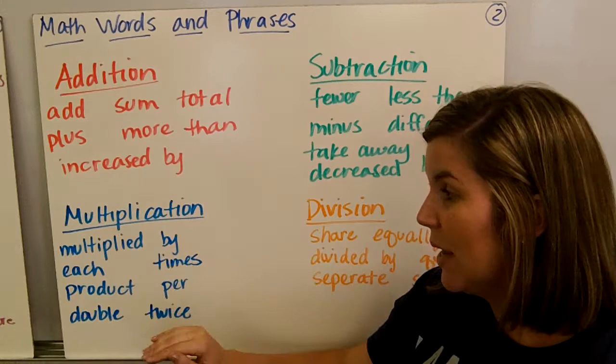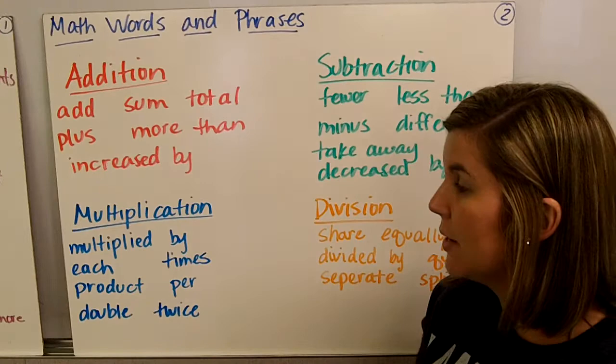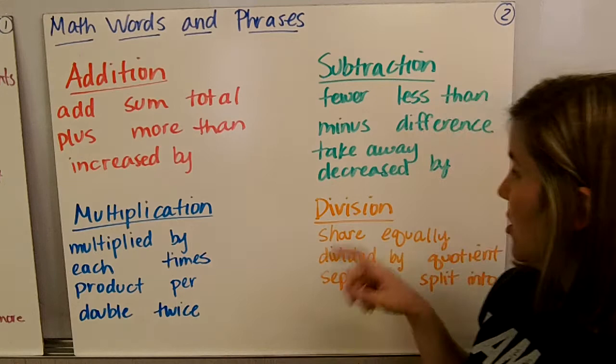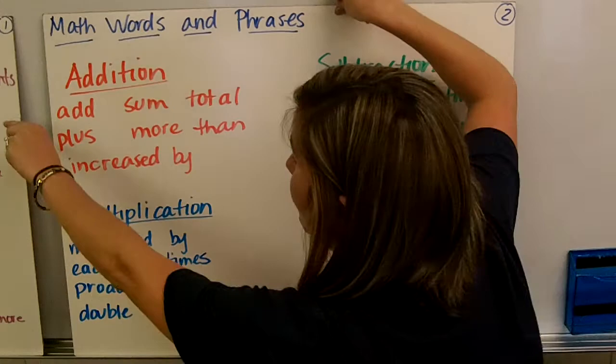For multiplication, you might see multiplied by, each, times, per, product, double, twice, triple. You might hear like $15 per shirt, so that's one example of multiplication. Division: share, equally, divided by, quotient, separate, and split in two.